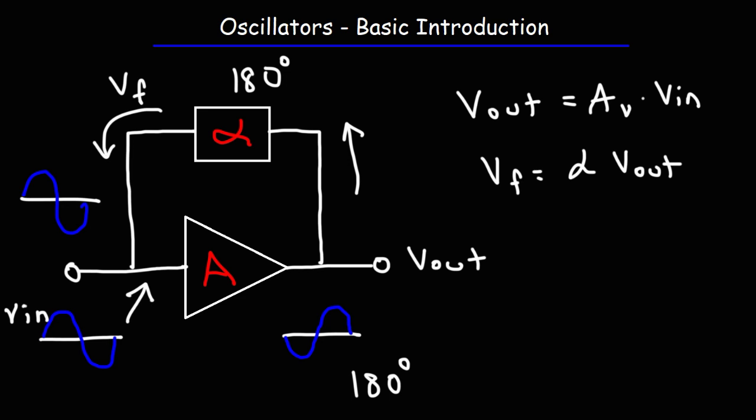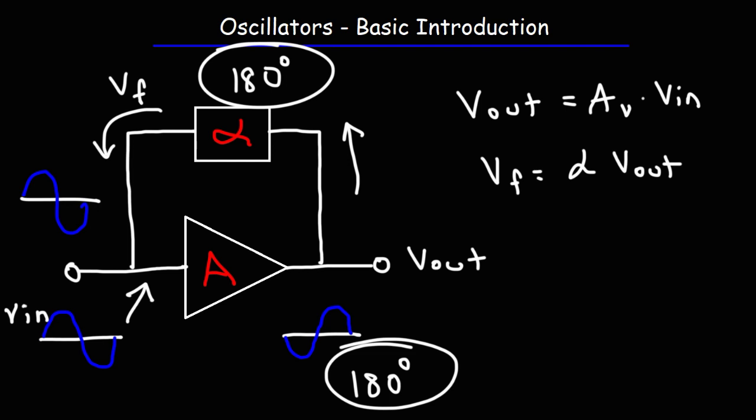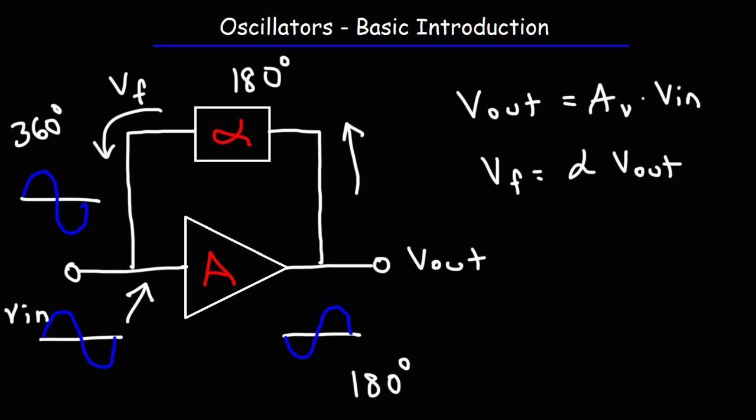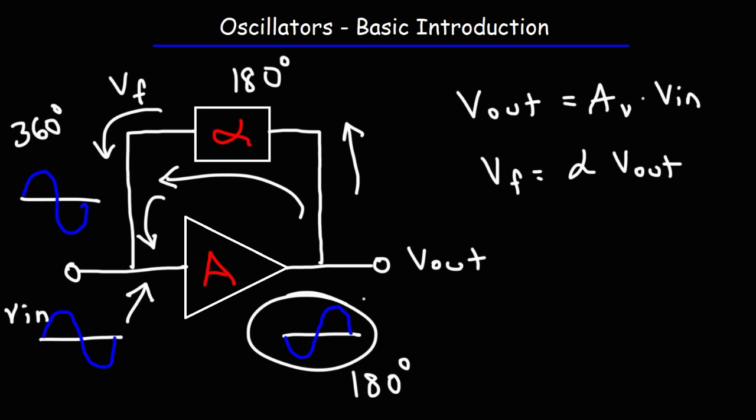If we add these two angles, 180 plus 180 equals 360 degrees, and thus Vf, the feedback voltage, will be in phase with the input voltage. Once this circuit is given a trigger pulse — for example, when you connect the power supply to the oscillator — the signal at the output is fed through the feedback going into the input of the amplifier, it gets amplified, comes back out of the output, and the cycle continues.